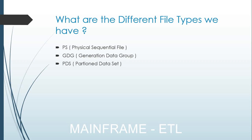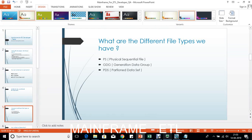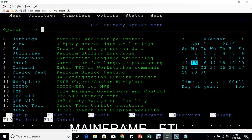Now let's connect to the mainframe system and see what a physical sequential file looks like, what a GDG file looks like, and also the PDS partition data set. As mentioned in the previous tutorial, you need to connect using a mainframe emulator, log in with your user ID and password, and you'll land on the ISPF primary option screen.